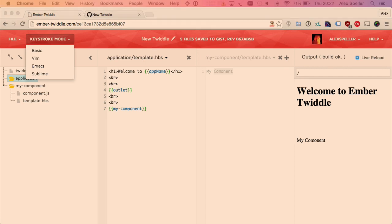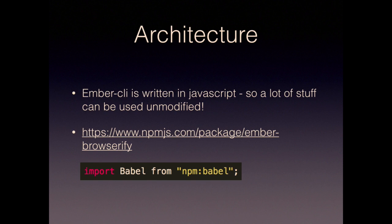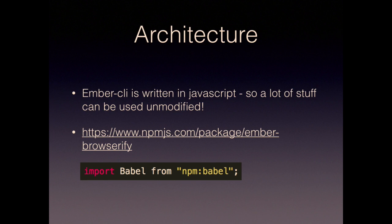So let's talk about the architecture. Ember CLI is written in JavaScript, which is great because it means you can pretty much use wholesale loads of the infrastructure from Ember CLI and just put it in a browser. If you look at Ember Browserify — it's an Ember CLI add-on — it lets you use stuff from Node really easily. You just use one line: import Babel from NPM Babel, or whichever NPM package you want. Babel is used to compile ESNext JavaScript written in Ember CLI into ES5 for the browser.